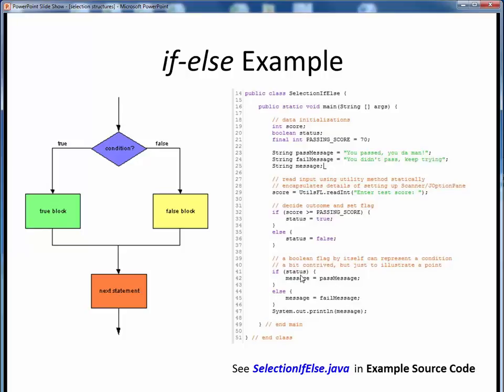Nevertheless, we have the same logical behavior as before. If the status is true, this output message is set to this predefined pass message, or if the status is false, then this output message is set to this other predefined fail message. Either way, after the if-else, the last thing we do that's common to either outcome is to print out the status message.